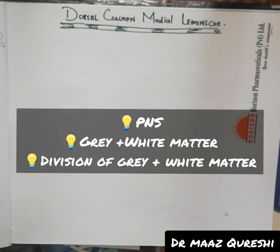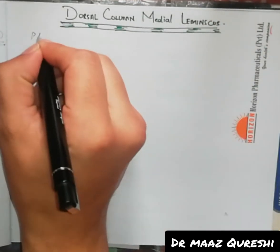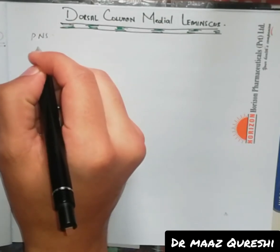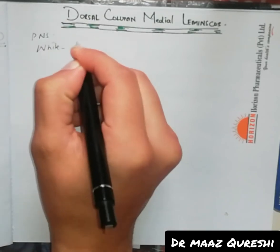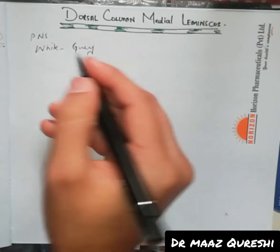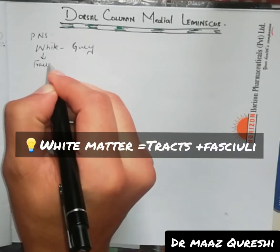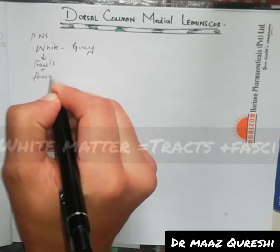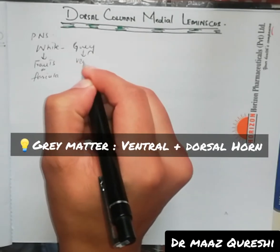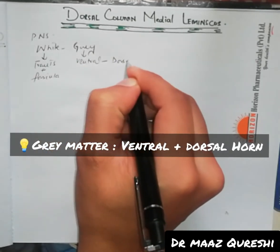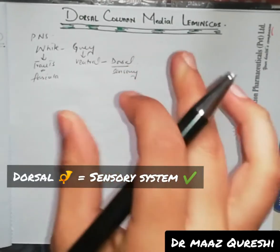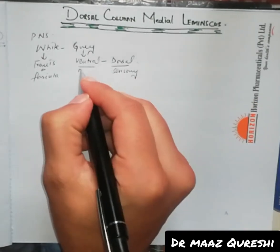The spinal cord is a part of the peripheral nervous system and it has two parts: the white matter and the grey matter. The white matter is responsible for tracts and fasciculi. The grey matter is divided into two parts: the ventral horn and the dorsal horn. The dorsal horn is responsible for sensory systems, which we'll mainly focus on, and the ventral horn is basically motor.